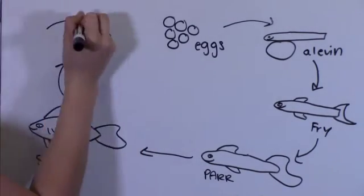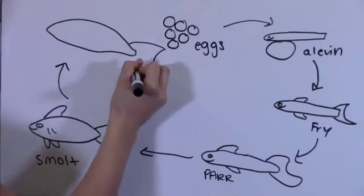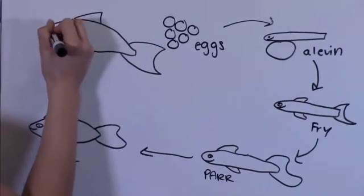When adult salmon are ready to spawn, they will migrate upstream. Eggs are laid and fertilized, and the cycle continues.